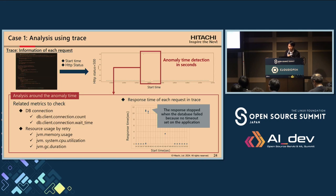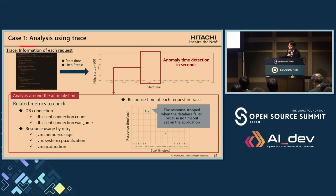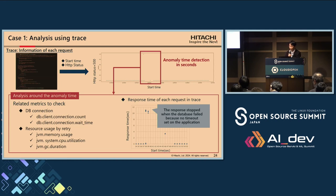Unlike metrics, traces record detailed information for individual requests, capturing timestamps, response times, and HTTP status. This chart shows the start times of each trace and flags those with HTTP status 500 during the anomaly time identified by metrics. Since we are sending multiple requests per second during testing, sections with no traces also indicate the impact of the failure. To analyze the impact during the anomaly time, we check other metrics and traces. For example, during a database failure, changes in connection count and wait time can be observed from database metrics.